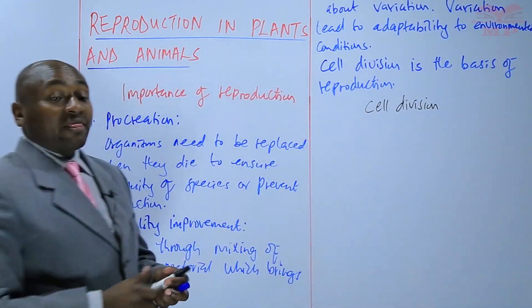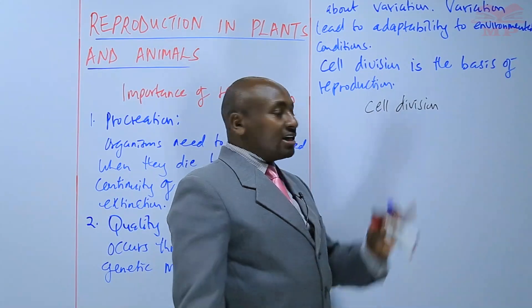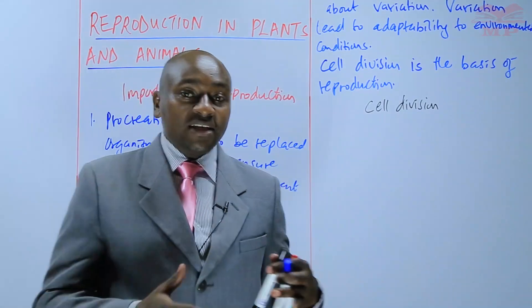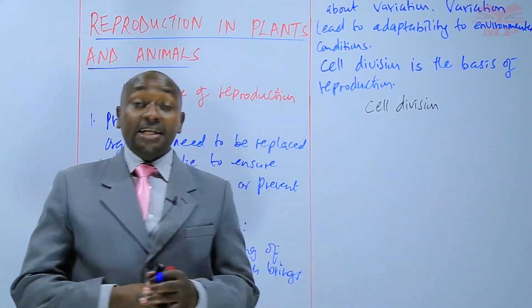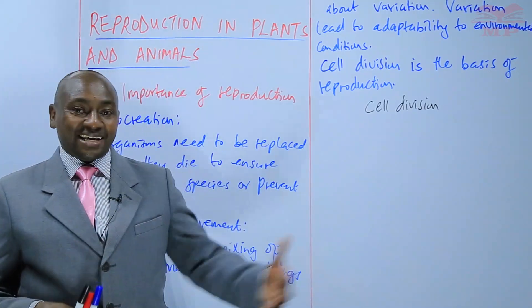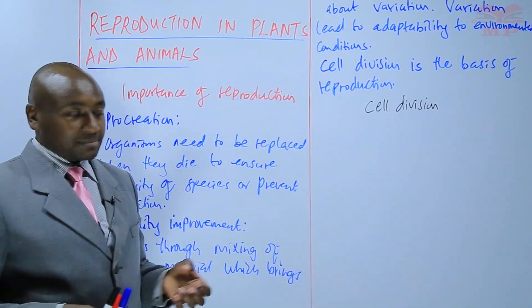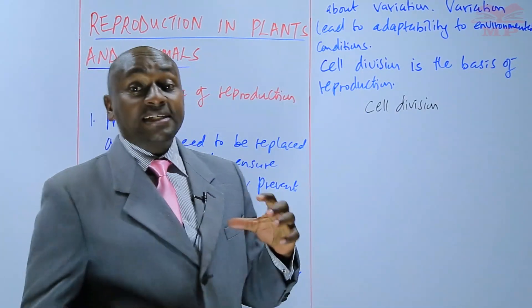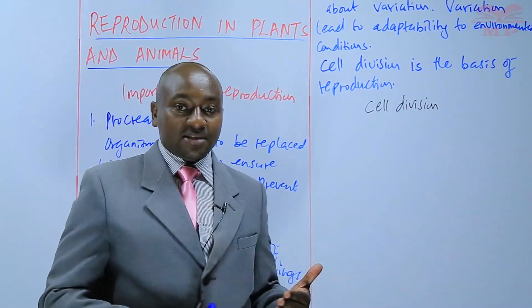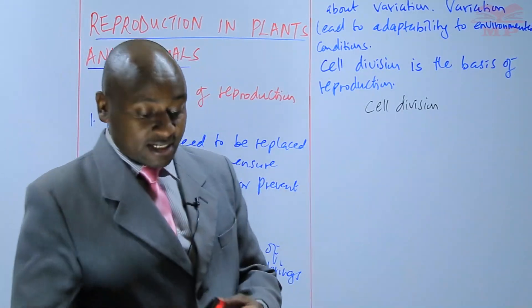The term cell division — just as it states — there is a cell involved and there is division involved. When these cells reach maturity, they divide into what we call daughter cells. Daughter cells are the offspring of the mature cells, and this division leads to an increase in the number of cells. When the number of cells increases, the population is also increasing.